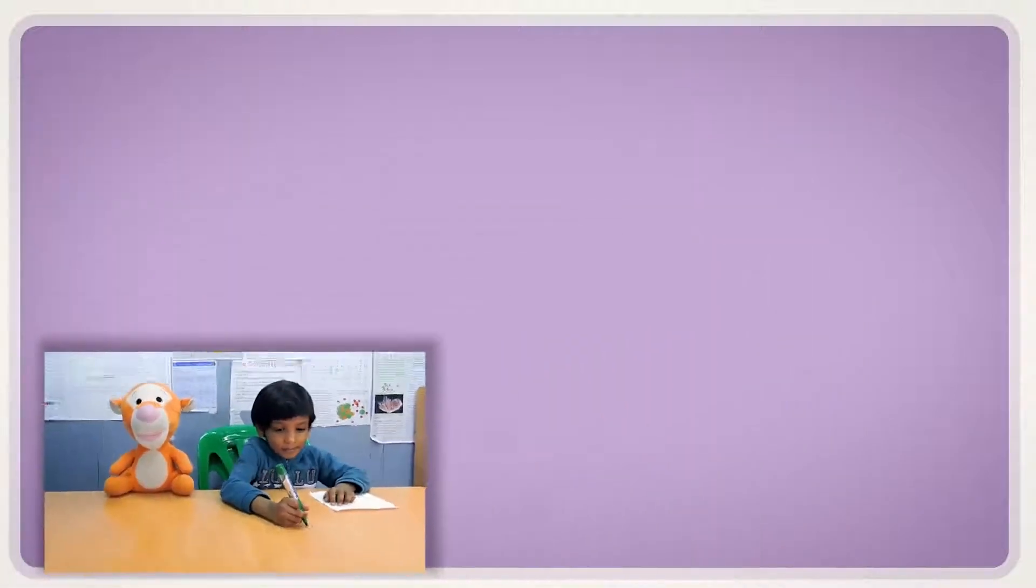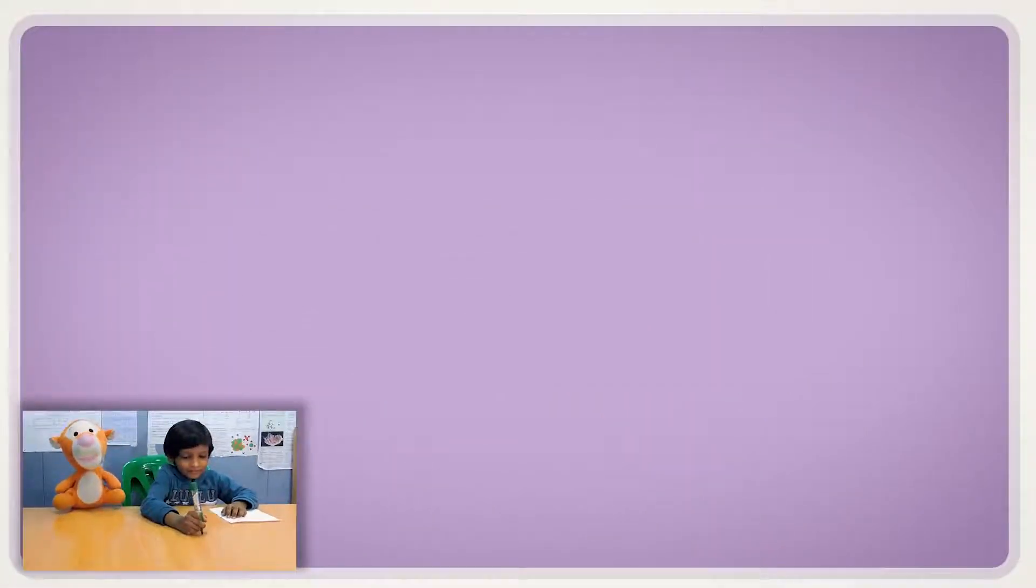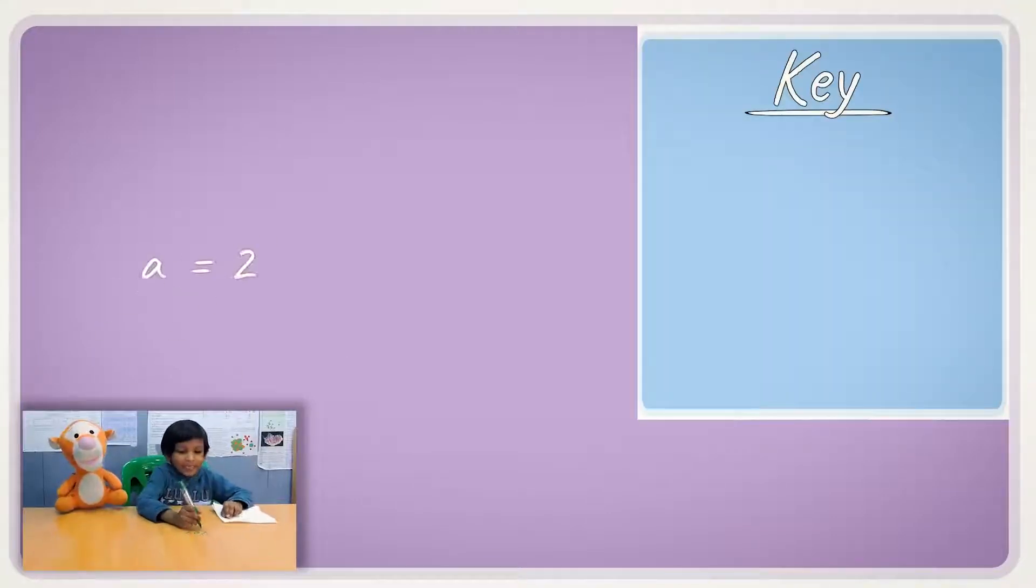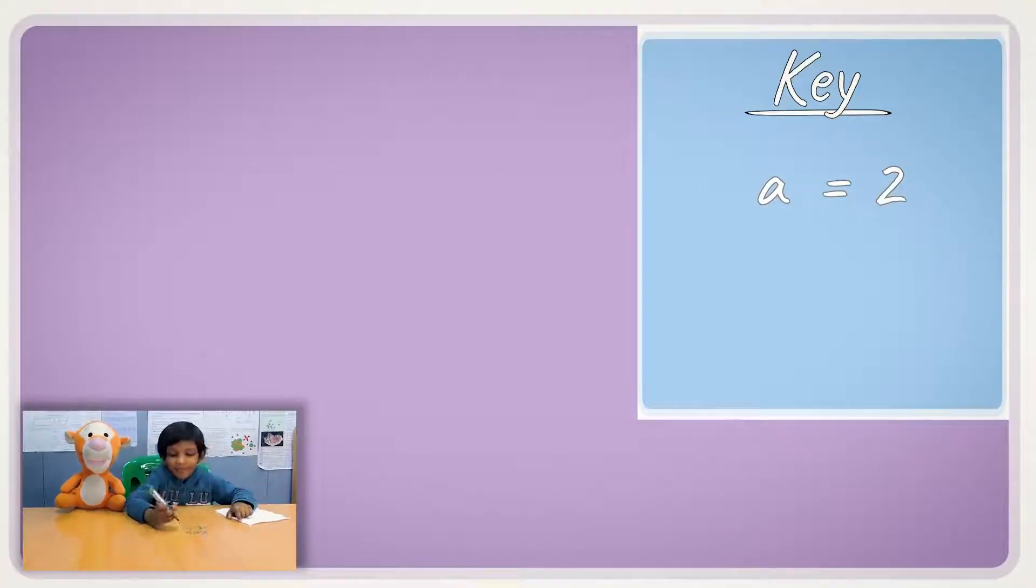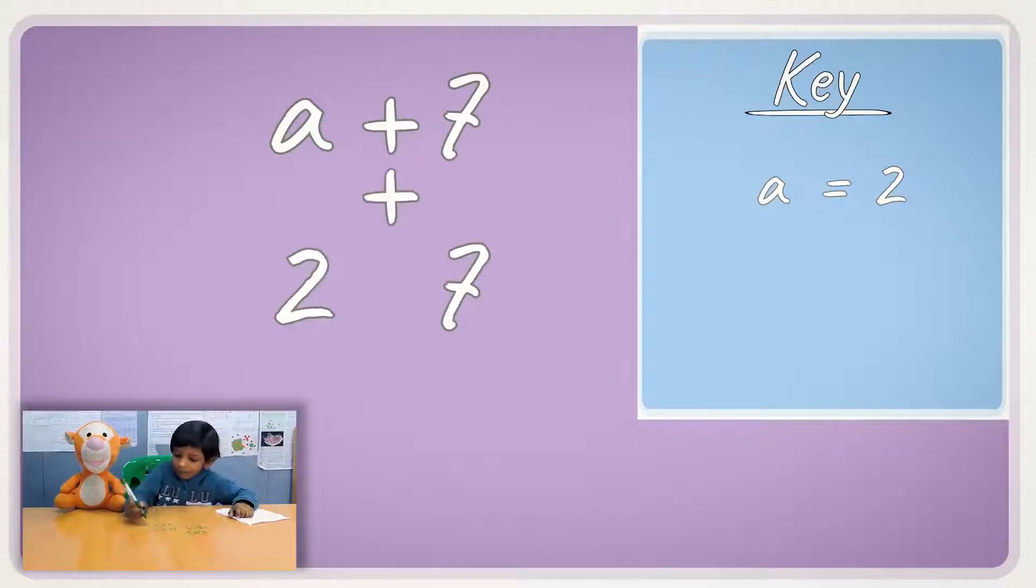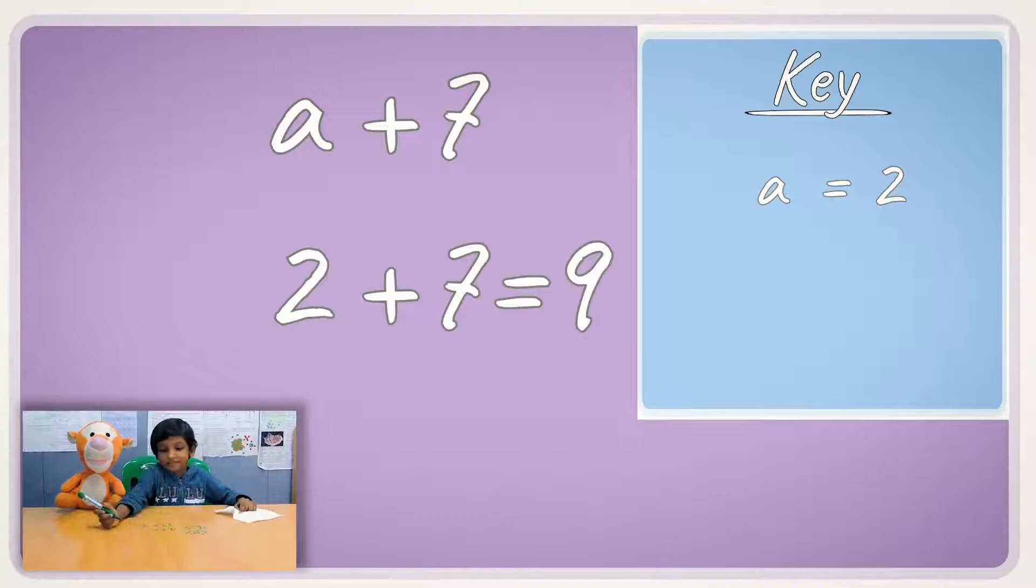Remember the substitution? The substitution? Yeah, I do remember the substitution. Okay. First, we have a key. A is equal to 2. Okay. And then, let's say we have our equation, A plus 7. So, we replace A with a 2. And we'll write that final answer as a 9. Okay.